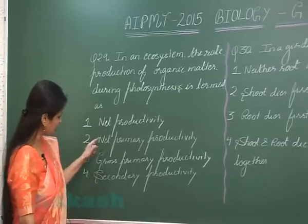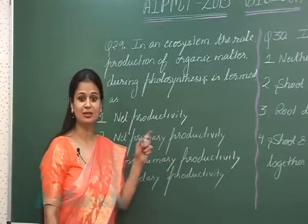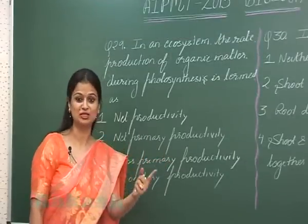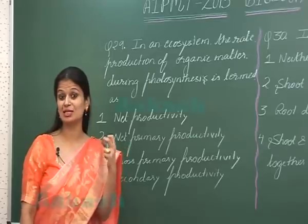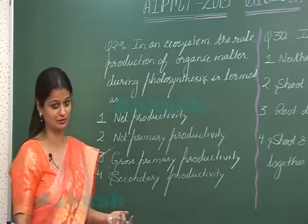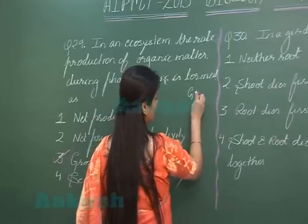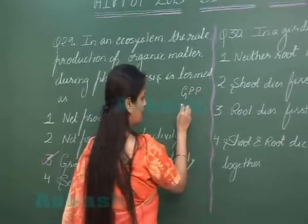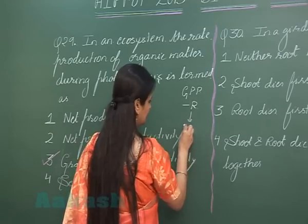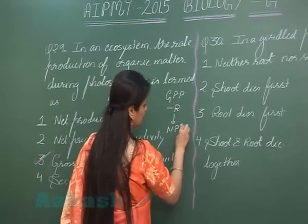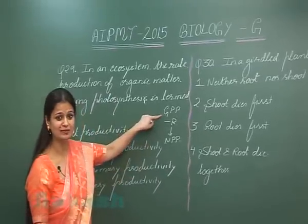Now, what is net primary productivity? Gross primary productivity represents the rate of formation of organic matter, but some of that organic matter is utilized by the plant for respiration. So, gross primary productivity minus respiratory loss represents net primary productivity.